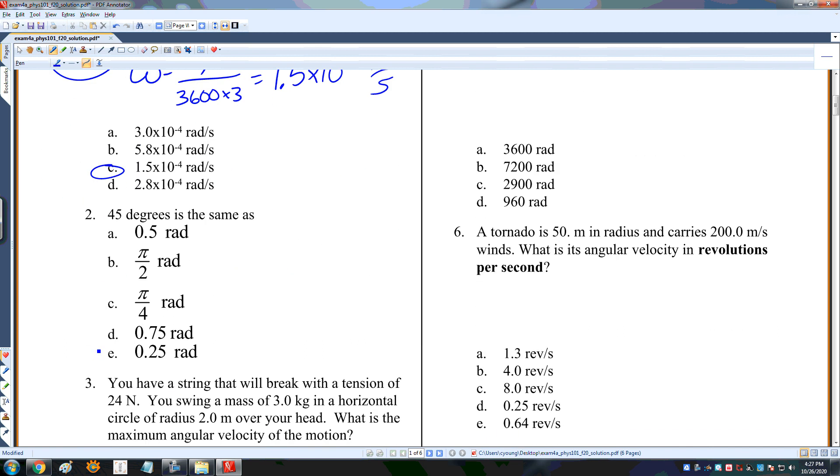So the answer is C. 45 degrees is the same as, well, if I think about my unit circle, this is pi over 2, that's 90 degrees, so this is going to be half of that or pi over 4.